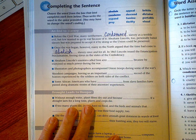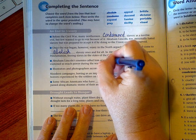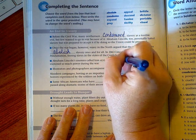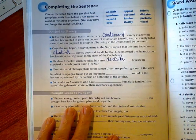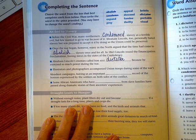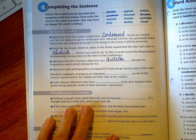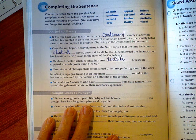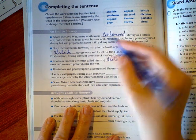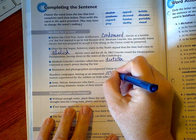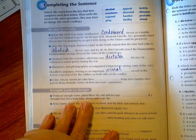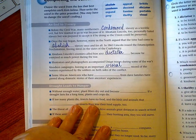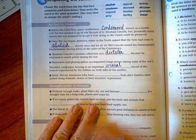Moving on. Abraham Lincoln's enemies called him a dictator because he exercised so much power during the war. Illustrators and photographers accompanied Union troops during some of the war's bloodiest campaigns, leaving us an important and sad visual record of the horrors experienced by the soldiers on both sides of the conflict.